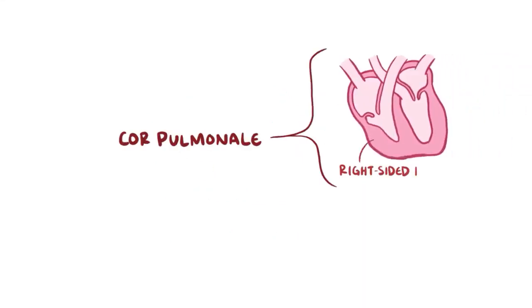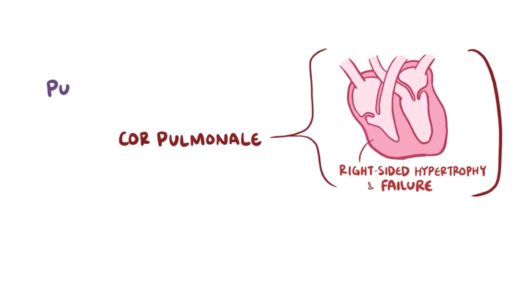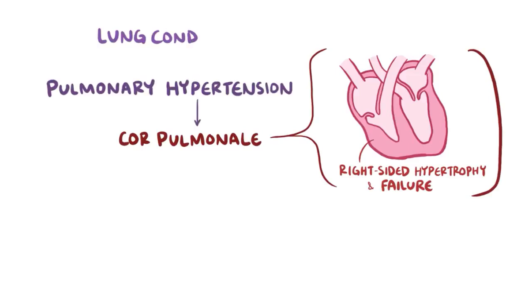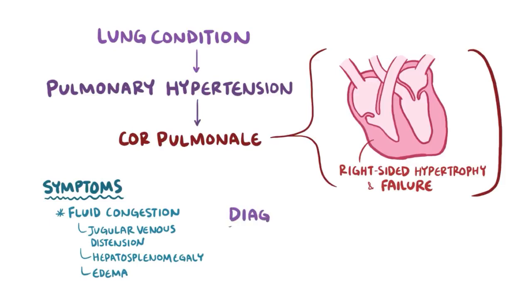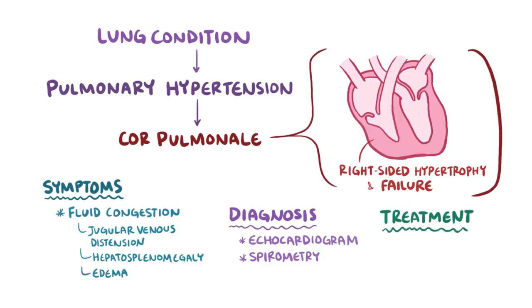As a quick recap, cor pulmonale is right heart hypertrophy, dysfunction, or failure caused by pulmonary hypertension from a lung condition. This results in systemic fluid congestion leading to jugular venous distension, hepatosplenomegaly, and edema. After diagnosis with echocardiography and potentially follow-up tests like spirometry, treatment includes addressing the underlying lung condition and administering supplemental oxygen as well as medication.